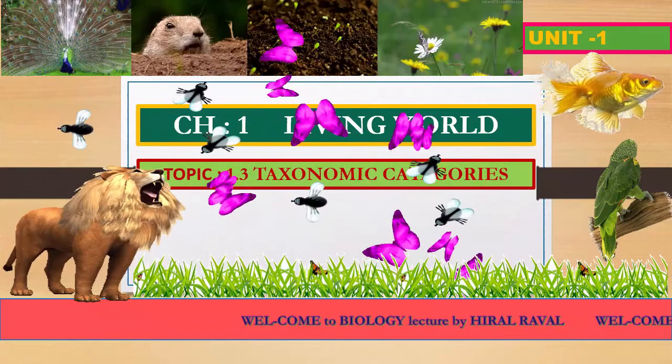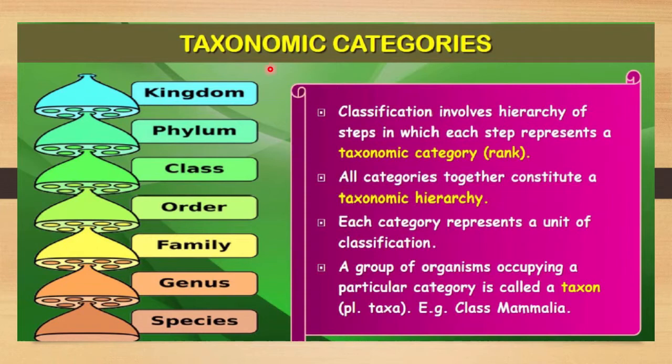Hello students, today we are going to discuss the third topic of this chapter: taxonomic categories. Here you can see some categories of taxonomy. The lowest category is species, then above it is genus, then family, then order, class, phylum, and kingdom. The highest category is kingdom and the lowest category is species. Let me discuss one by one what each category means.